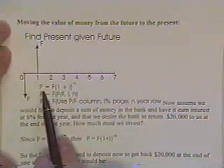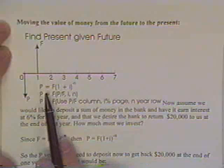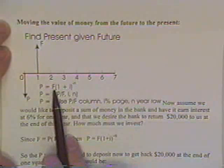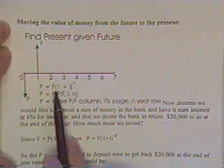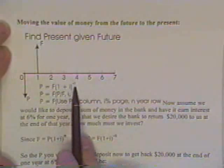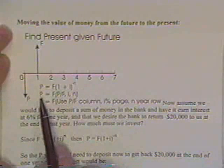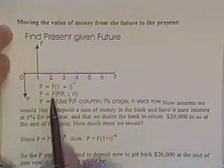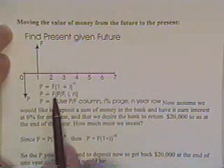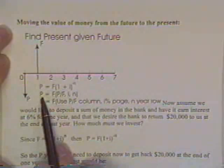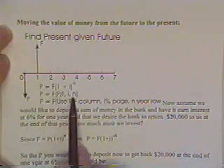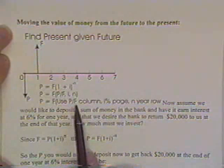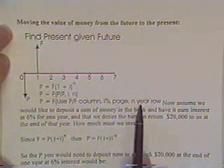The equation listed in your manual for this is that P can be found by multiplying the future amount that we know times (1 + i) to the minus n, or you can use the economics way by saying the future value can be transformed into the present value by multiplying times a factor found from the table. Use the P over F column, the I percent page, and the n year row.